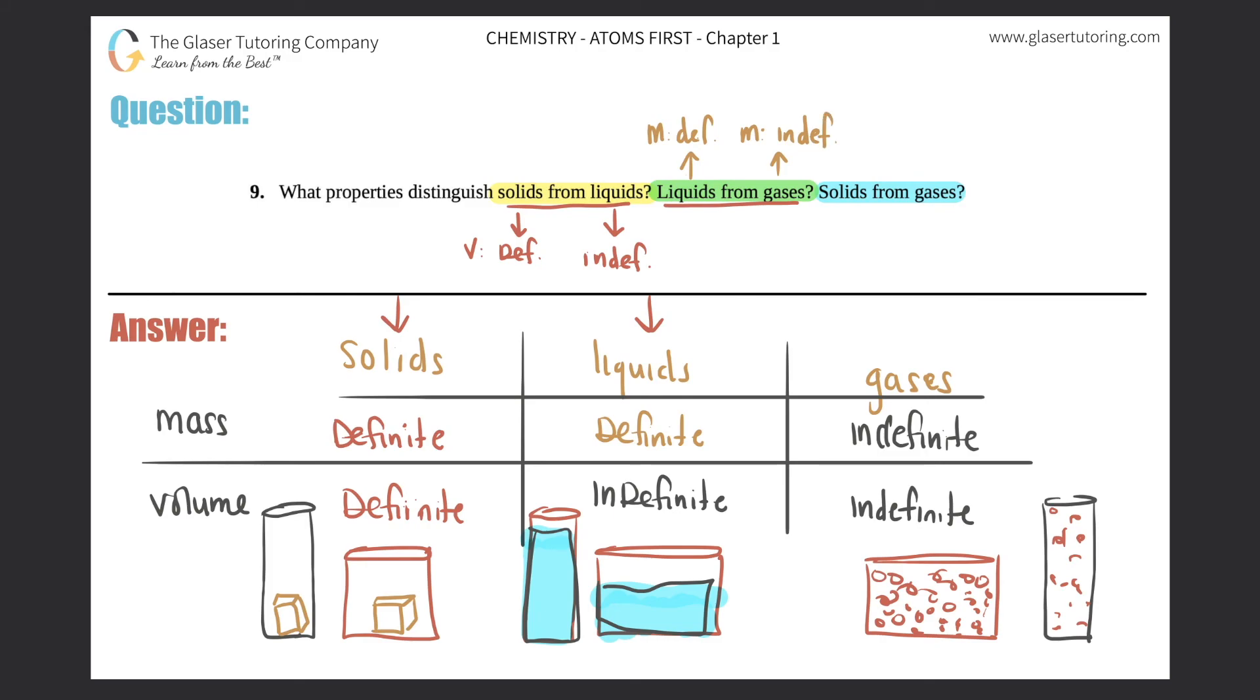And then solids from gases? Solids are definite and definite for both mass and volume. Gases are indefinite, indefinite for mass and volume. So they're completely different. So for mass, definite to indefinite. Volume, definite to indefinite. But hopefully you guys memorize this chart because this will help you out a lot, and that answered the question.